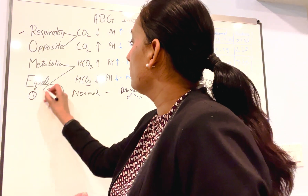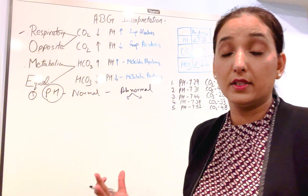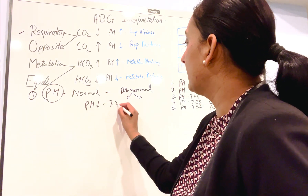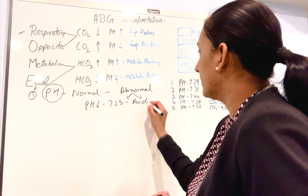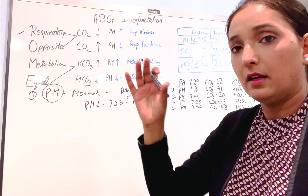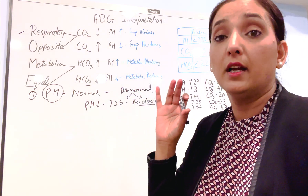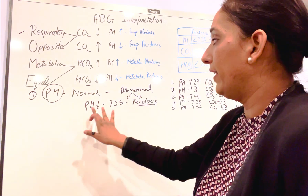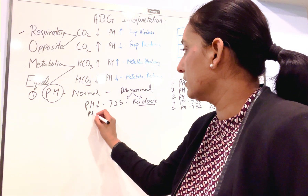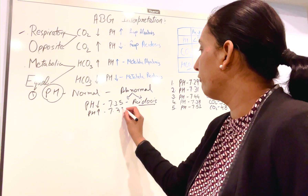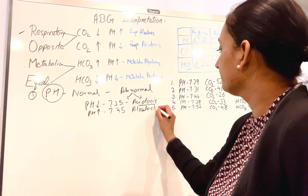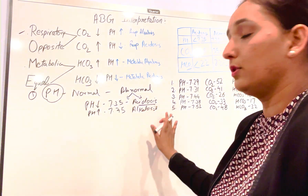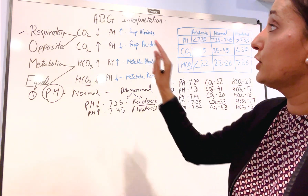From the pH you will come to know whether body is going into acidosis or alkalosis. If pH is below 7.35, that means body is going into acidosis, so you will pick the option with acidosis. If pH is more than 7.45, that means body is going into alkalosis. Once you've identified acidosis or alkalosis from pH, your next step is to look at carbon dioxide.